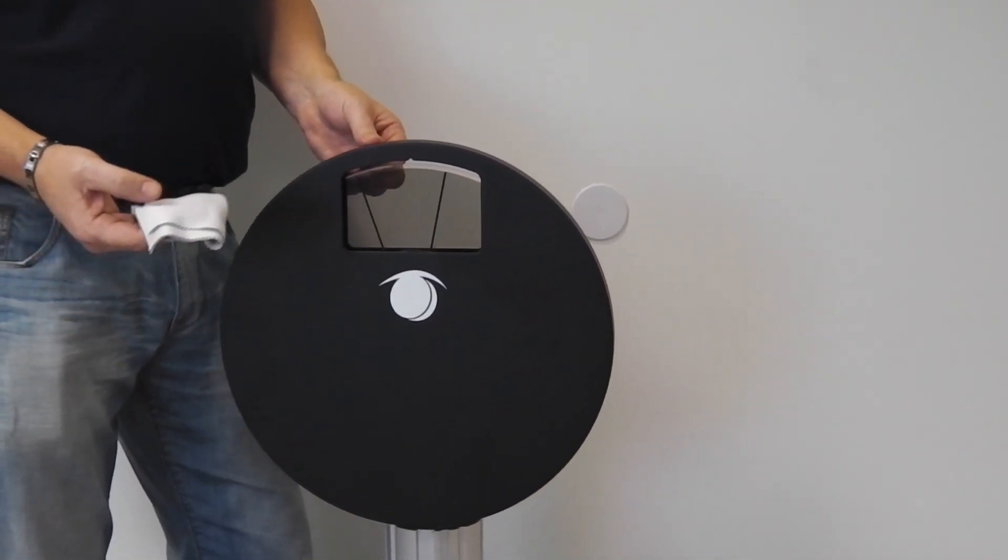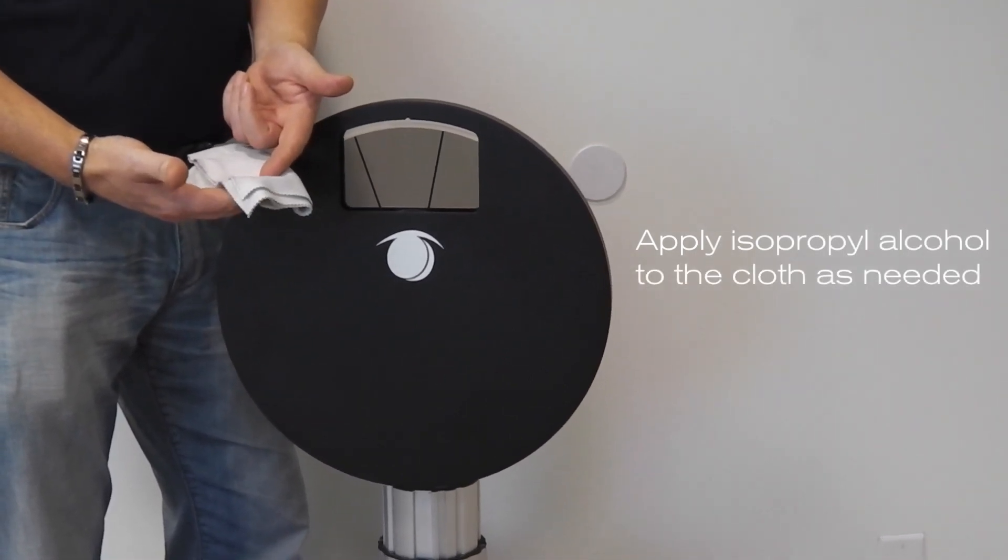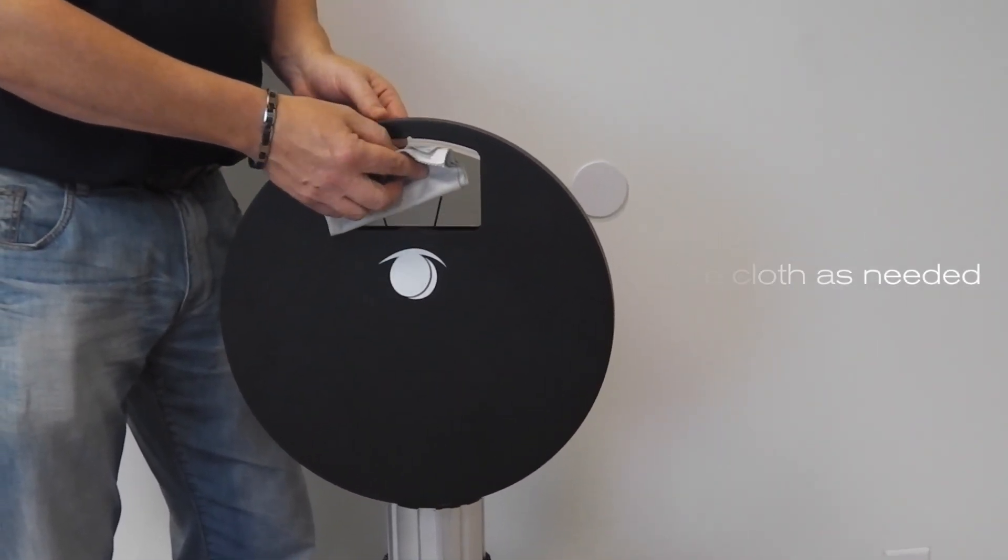If any deposits on the filter disc are a little stubborn to remove, you can apply some isopropyl alcohol to the cleaning cloth and this will aid the cleaning process.